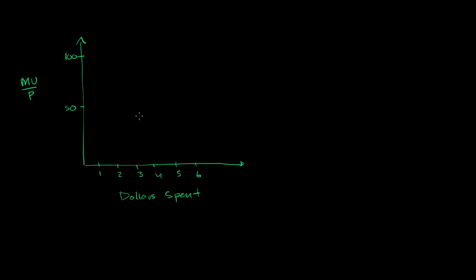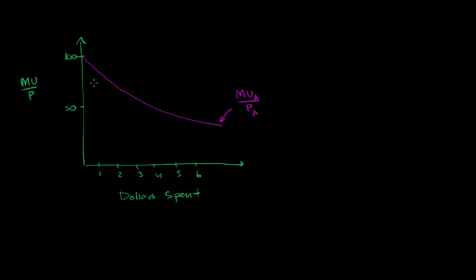We're going to look at two arbitrary products. One product looks something like this — and again, you have diminishing utility as you get more and more of that product. In the case of fruit, the more pounds you get, the less you want that next incremental pound. This is true of most things. So this is the marginal utility for Product A per price of A. And here's another product — the marginal utility for Product B per price of B.